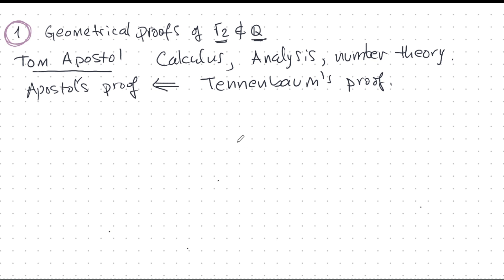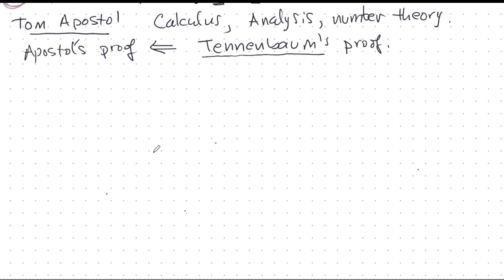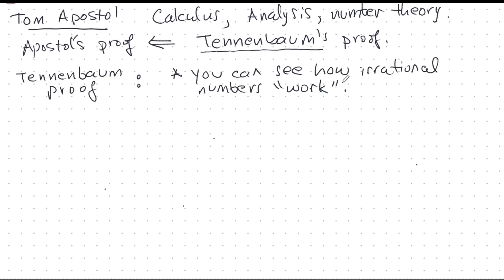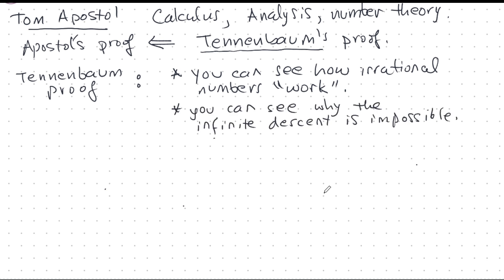Apostol's proof is very similar to one by Stanley Tenenbaum, which was an earlier proof. Tenenbaum's proof is on its own really interesting also. You can see how irrational numbers work — in some intuitive way — and you can see why the infinite descent becomes impossible.